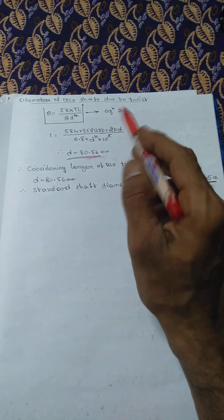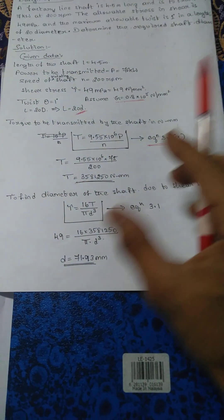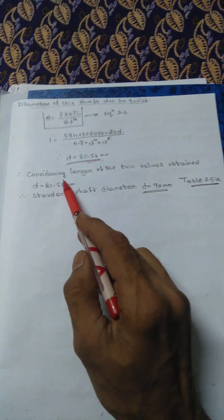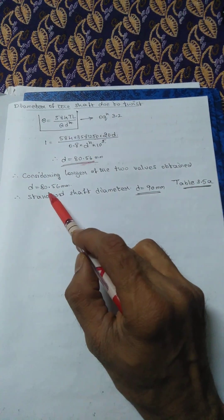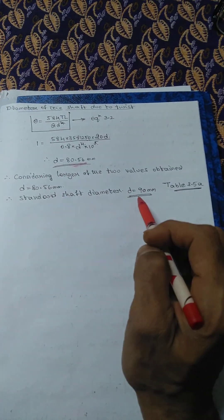Now compare D. Here it is 80.56 and here it is 71.93. What we have to do is consider the largest of the two values obtained: D equals 80.56 millimeters.